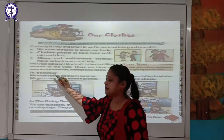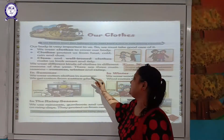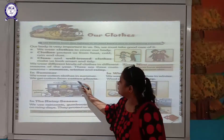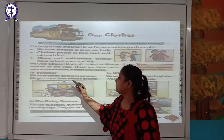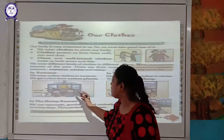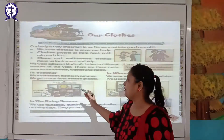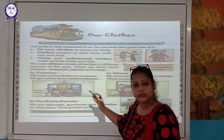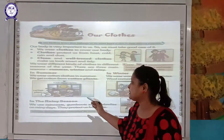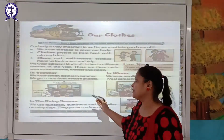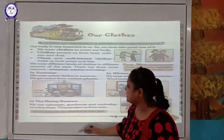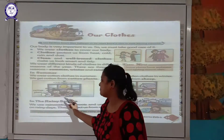In summer, we wear cotton clothes. It is very hot in summer, so to keep our body cool we wear cotton clothes. Examples of summer clothes include shirts, shorts, trousers and pants. We get cotton from the cotton plant. You can see here a picture of the summer season.